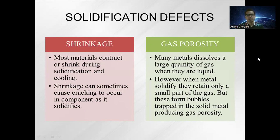The second type of defect is gas porosity. Many metals dissolve a large quantity of gas when they are liquid. However, when metals solidify, they retain only a small part of the gas, and these form bubbles trapped in the solid metal, producing gas porosity.